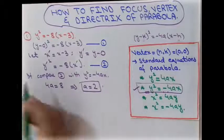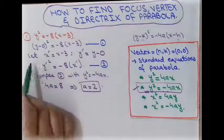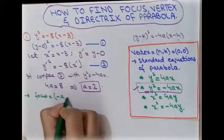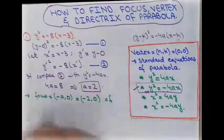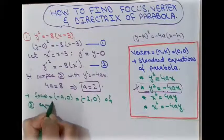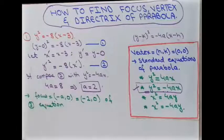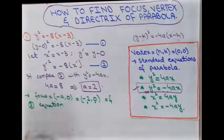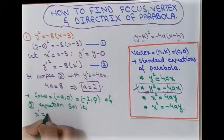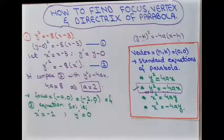Finding the focus of the second equation: since the parabola opens left, the focus is at (−a, 0) = (−2, 0). In this focus, the x′ coordinate is −2 and the y′ coordinate is 0.